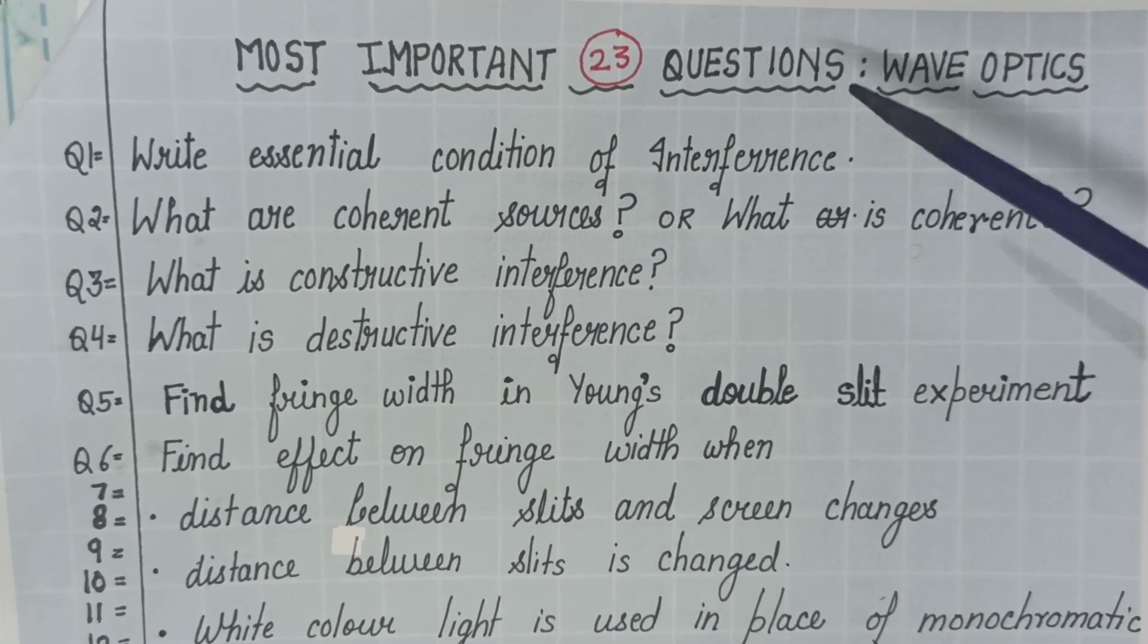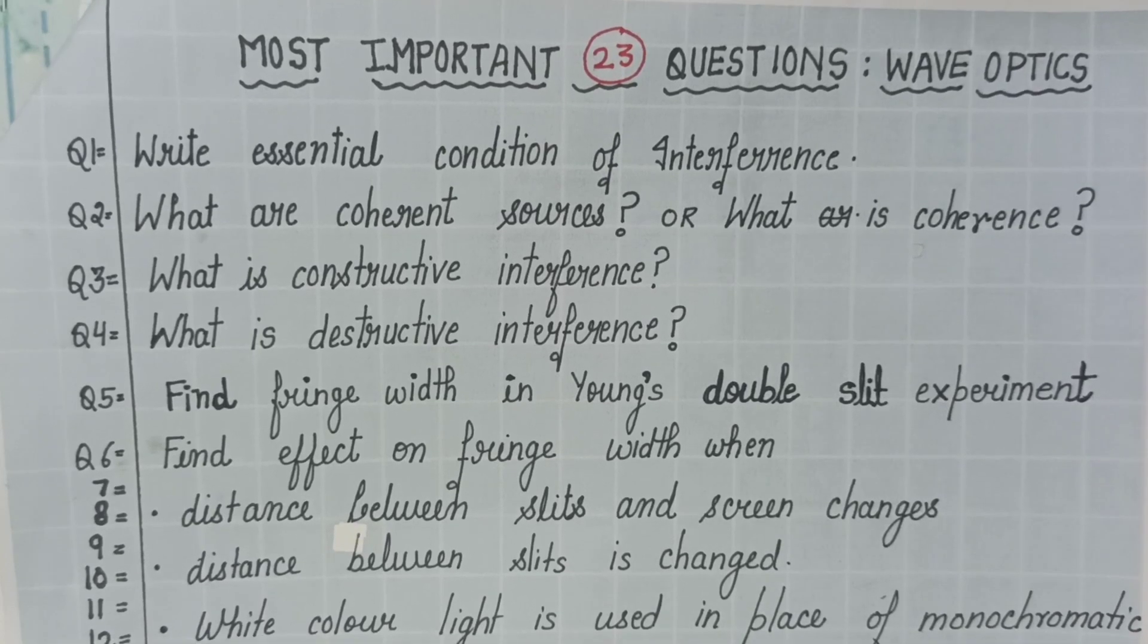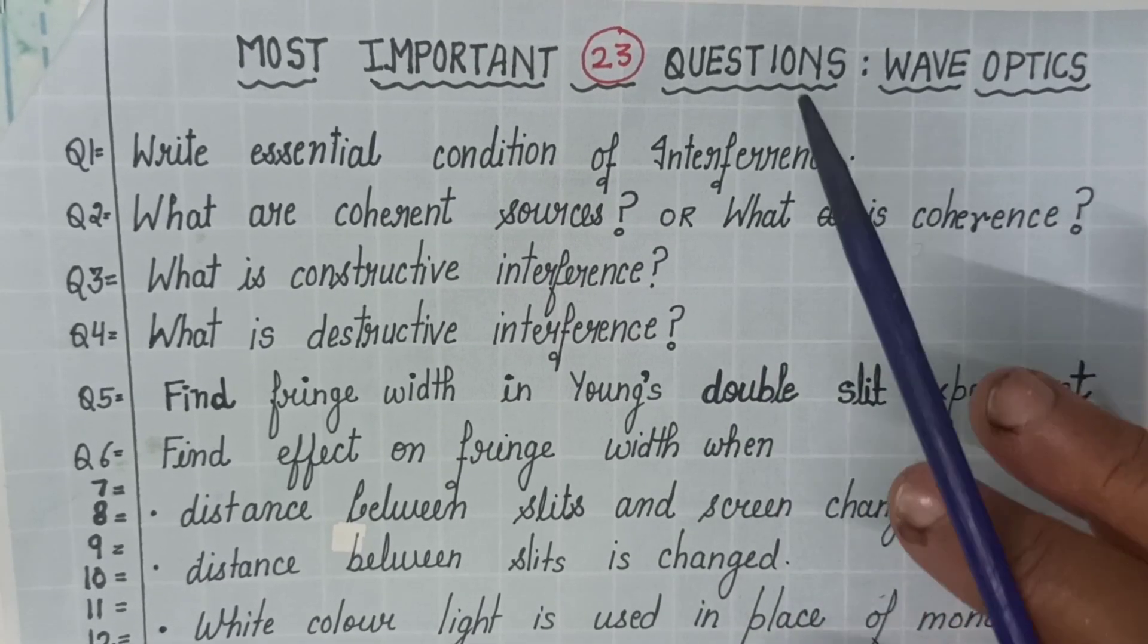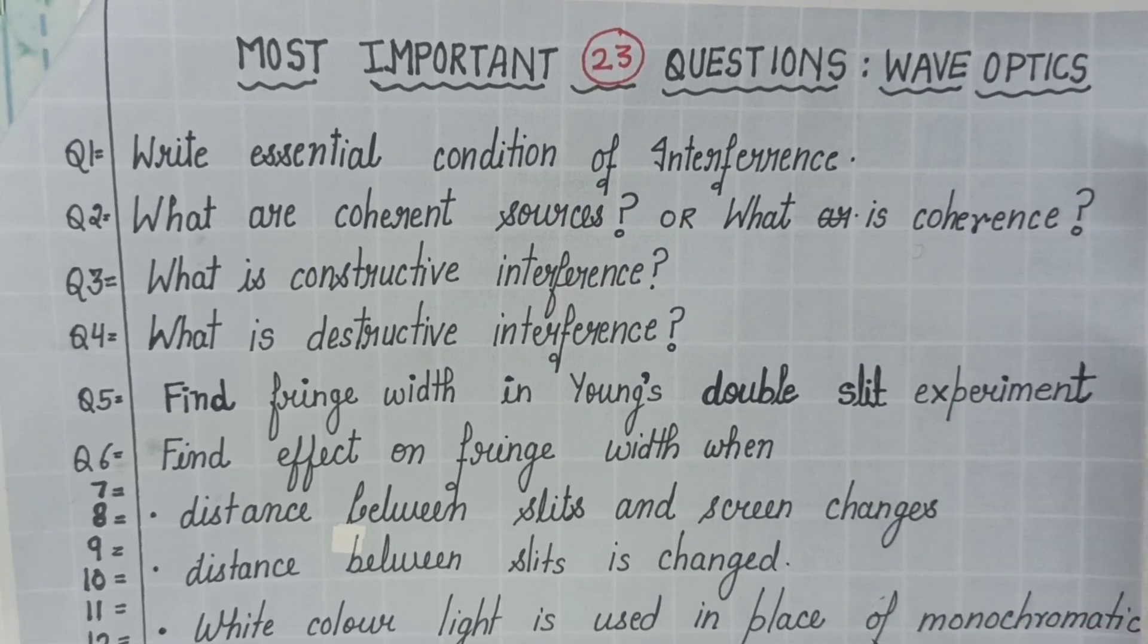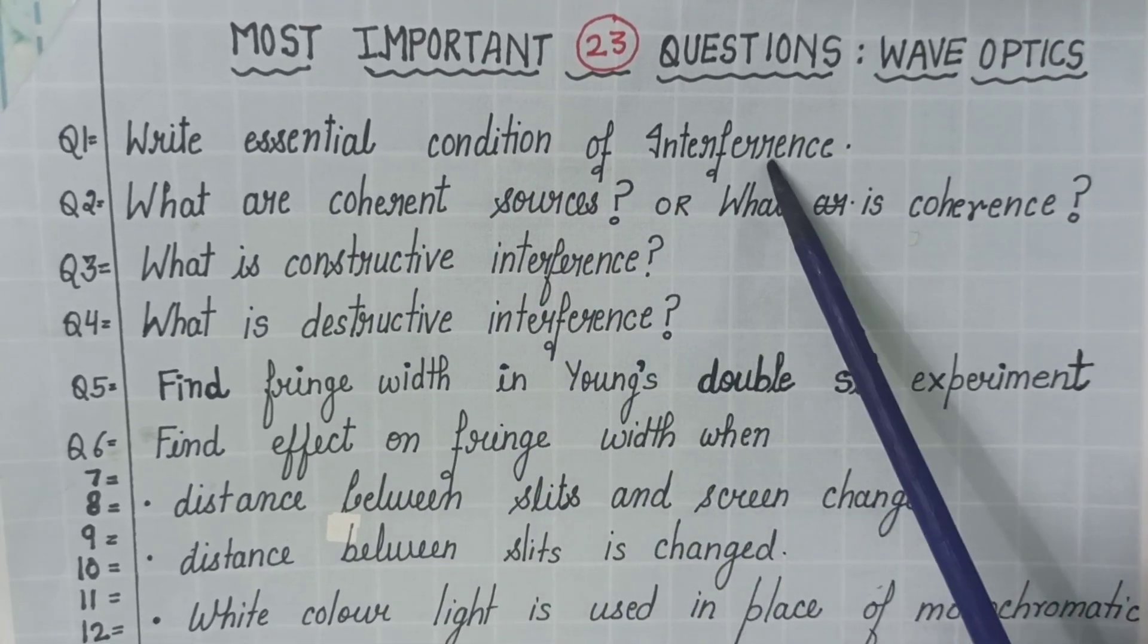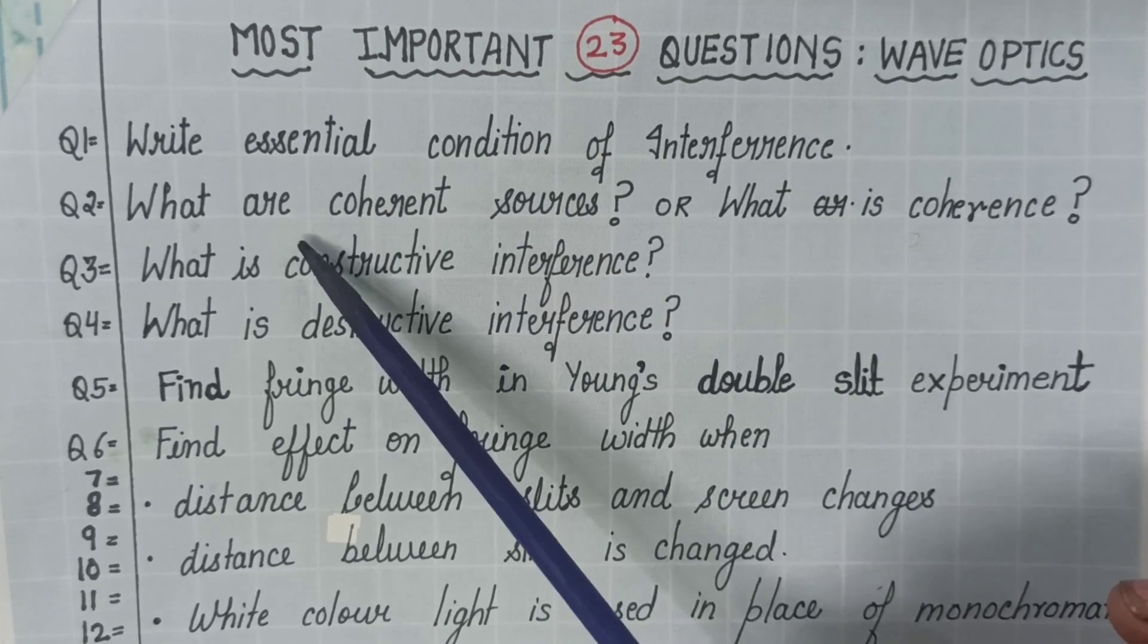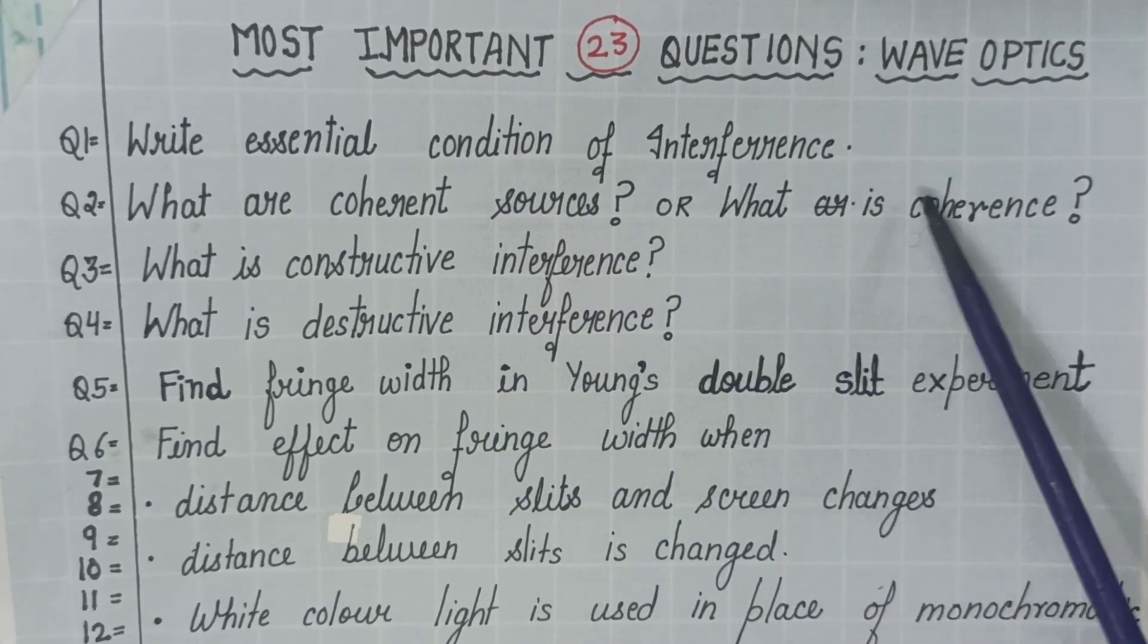Now, I am discussing the most important questions of wave optics also and I will keep this session, this video only for the discussion of the most important questions of optics. Right essential condition of interference. Very, very important. What are coherent sources or what is coherence?